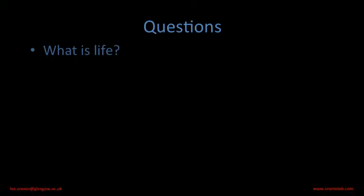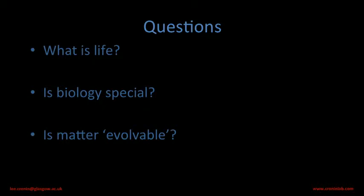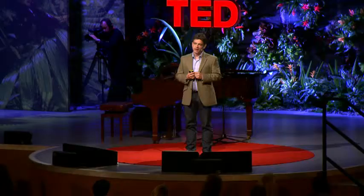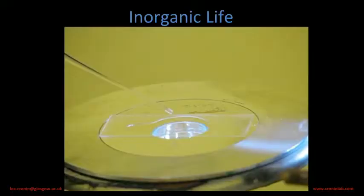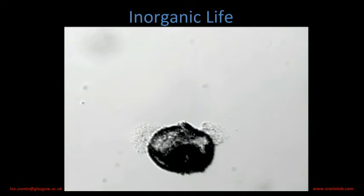This raises three really important questions: What is life? Is biology special — biologists seem to think so. Is matter evolvable? Now if we answer those questions in reverse order — the third question, is matter evolvable? — if we can answer that, then we're going to know how special biology is. And maybe, just maybe, we'll have some idea of what life really is.